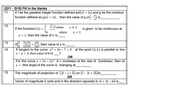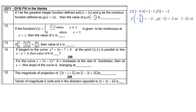Questions 11 to 15 are fill in the blanks. Question 11: if f is the greatest integer function and g is the modulus function, find g(f(−5/4)). First, f(−5/4) = f(−1.25) = −2, since −1.25 lies between −2 and −1 and the greatest integer function gives −2. Then g(−2) = |−2| = 2.